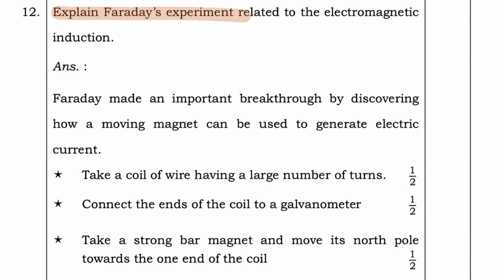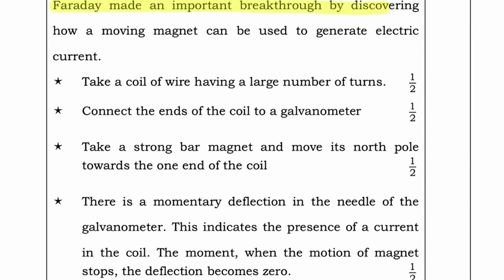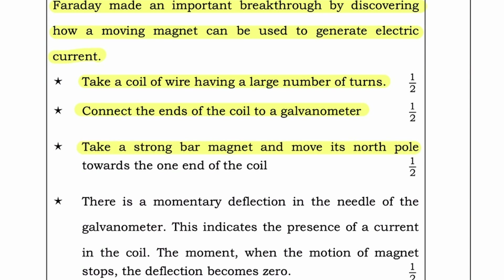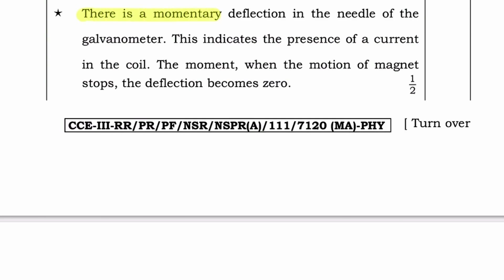Explain Faraday's experiment related to electromagnetic induction. Answer: Faraday made an important breakthrough by discovering how a moving magnet can be used to generate electric current. Take a coil of wire having a large number of turns and connect the ends of the coil to a galvanometer. Take a strong bar magnet and move its north pole towards the other end of the coil. There is a momentary deflection in the needle of the galvanometer, indicating the presence of a current in the coil. The moment when the motion of the magnet stops, the deflection becomes zero.